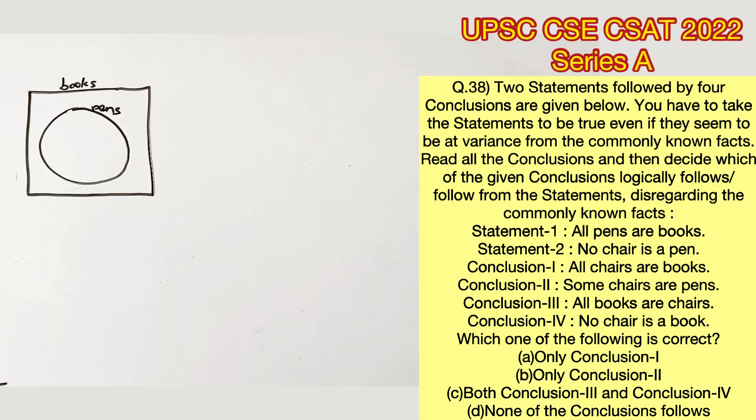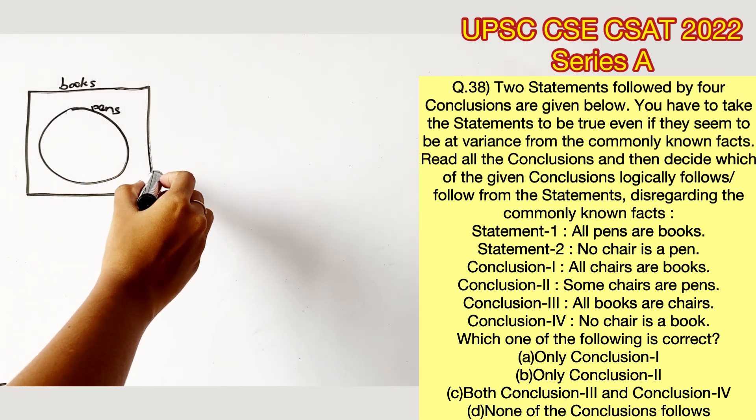Now the next statement says no chair is a pen. This statement can be represented in more than one form. Let's say diamond represents chair.